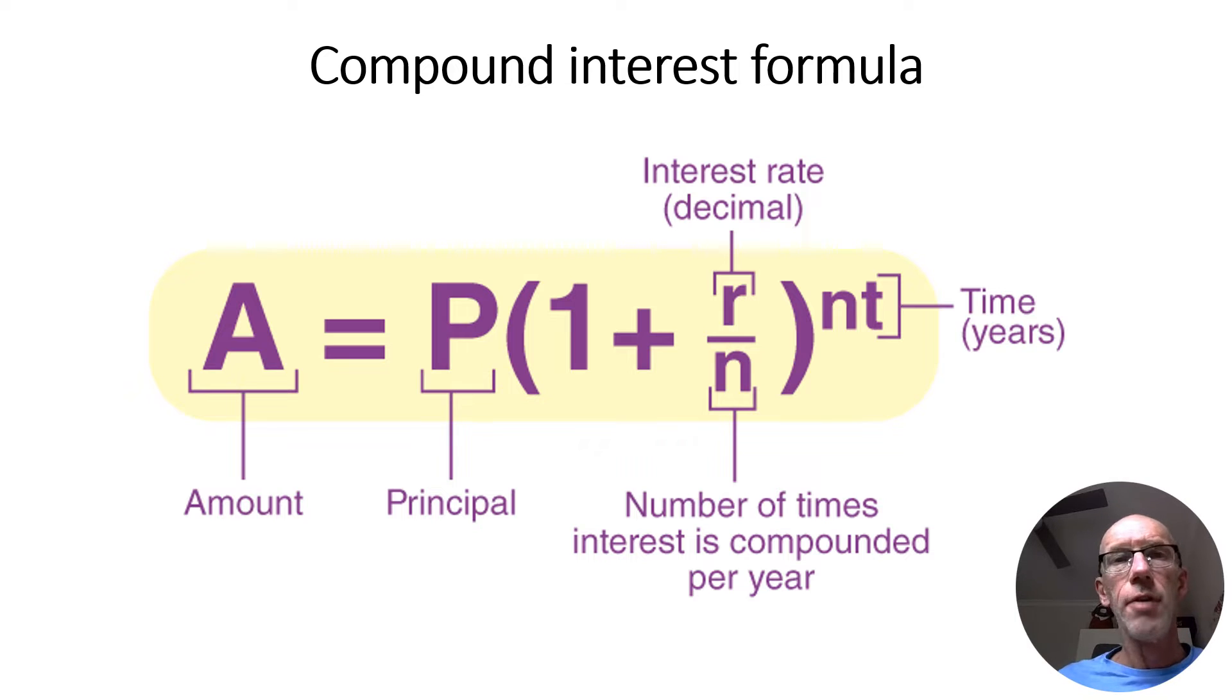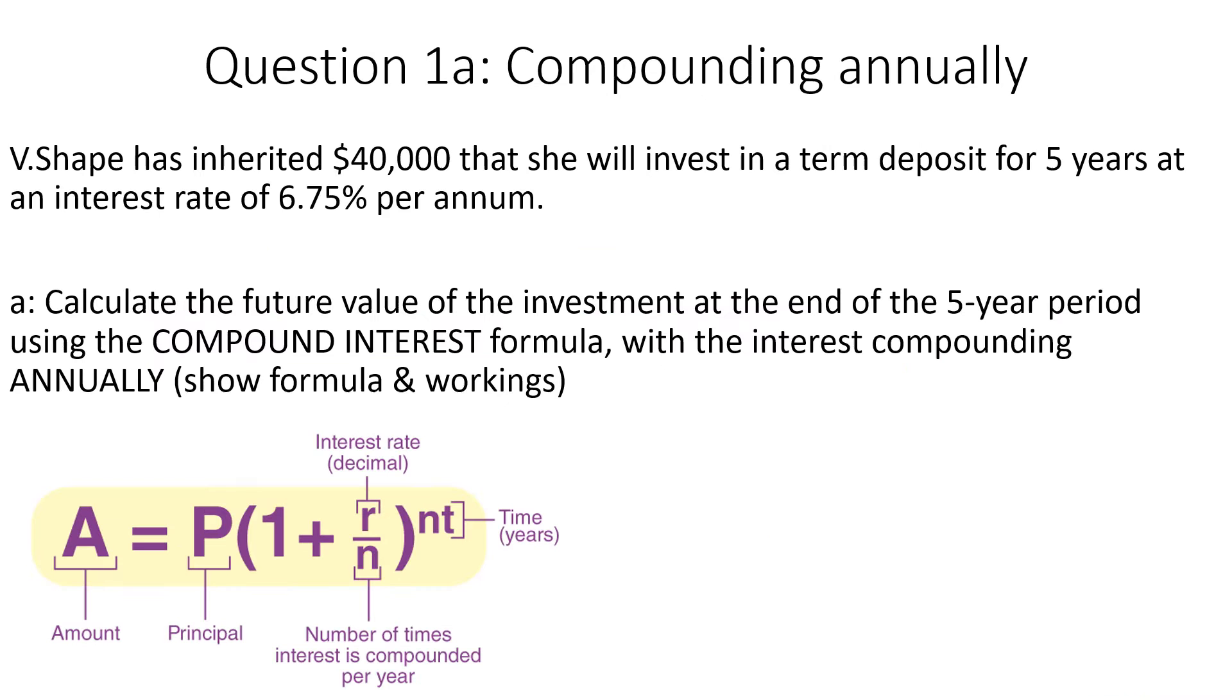So this is our formula. So the variables will include the principal, which is the original amount invested. R, the interest rate will be given as a percentage, so that will need to be converted to a decimal. T equals the time in years, so be careful with half years, etc. N comes into play if it compounds more than once a year and we'll illustrate that shortly.